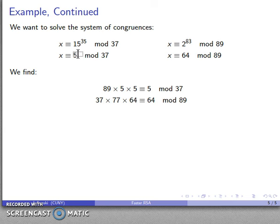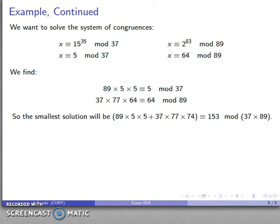So a multiple of 89 that's congruent to 5, well, there's one. A multiple of 37 that's congruent to 64, there's one. And I can add the two together to get a solution, and then reduce that solution mod the product. So here is a solution, and I'm going to reduce that mod the product 37 by 89. Note that this is Alice's public number N, and I get this number 153, which is the number that I started with, and the number I'm looking for as my decrypted value.